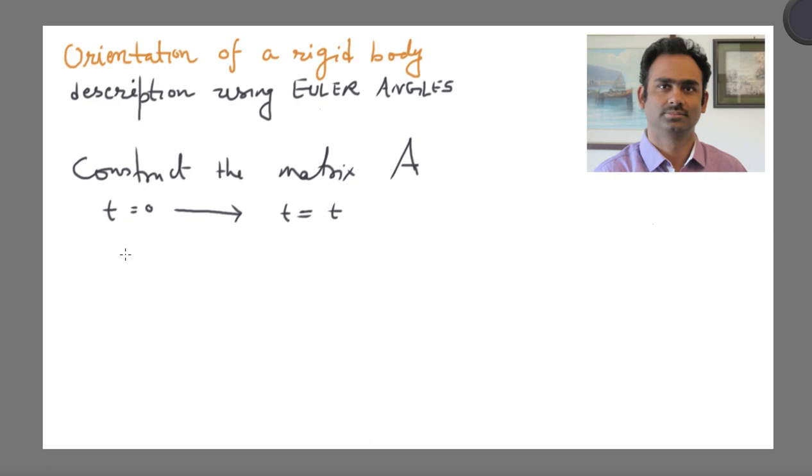And remember that we are looking at the case where one of the points in the body is fixed. So it has a fixed point and also remember that when we were talking about Euler angles, we had rigidly fixed a coordinate system in the body.